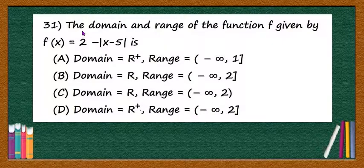Now the question is, the domain and range of the function f given by f(x) = 2 - |x - 5| is,